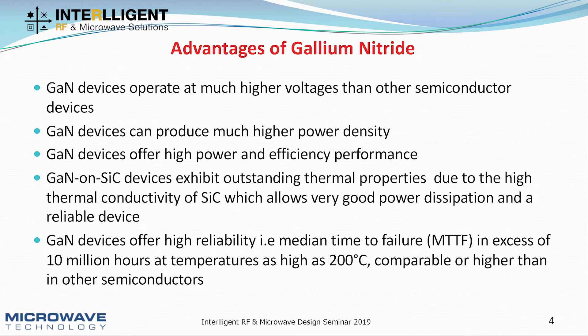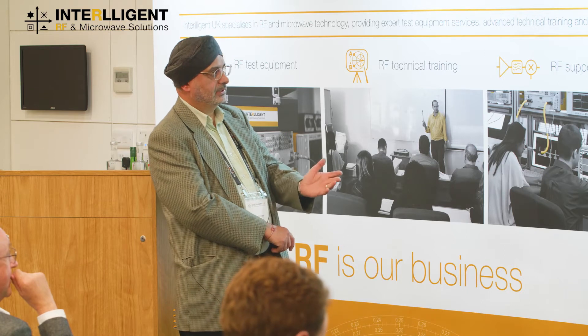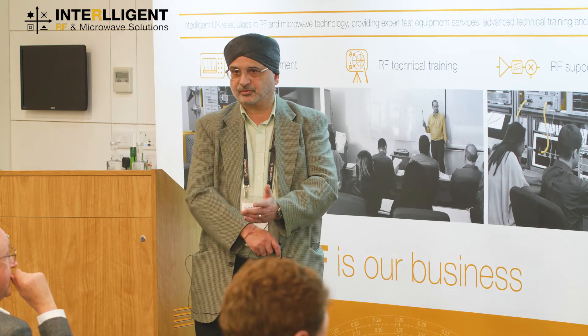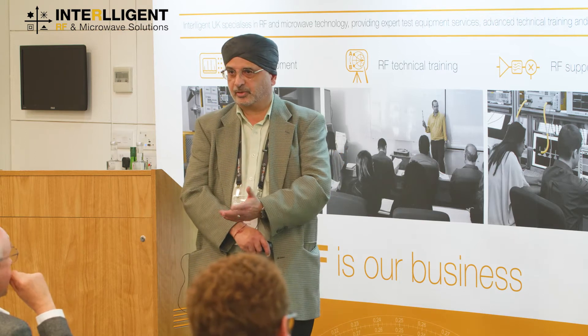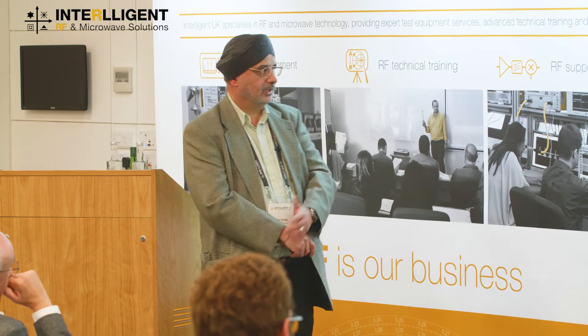Moving on to the advantages of gallium nitride — the GaN device can operate at higher voltage, which means higher voltage and lower current, so they have the capability of giving you higher efficiency. They also have much higher power density as a device. The additional advantage is that gallium nitride is realized on silicon carbide, and due to silicon carbide's properties of good thermal conductivity, it gives you very good device reliability and performance.